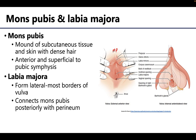In close proximity to the mons pubis and extending posteriorly towards the perineum are going to be two prominent, more longitudinally oriented folds of skin. These form the lateral boundaries of the vulva — these are the labia majora, connecting the mons pubis posteriorly with the perineum. If you recall from session nine, the round ligament of the uterus may end in the adipose tissue of the anterior portions of the labia majora.